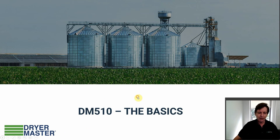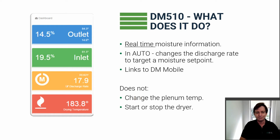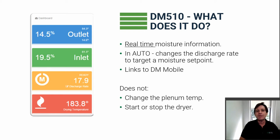The first question we get all the time is: what does the Dryer Master do? First of all, you get real-time moisture information from the inlet and the outlet of the dryer, so you can always see what the moisture is going in and coming out without having to go take samples. The Dryer Master takes that information and can calculate the best discharge rate to get the average outlet moisture that you want, and when it's ready, you can put it into automatic mode to control the discharge rate automatically.